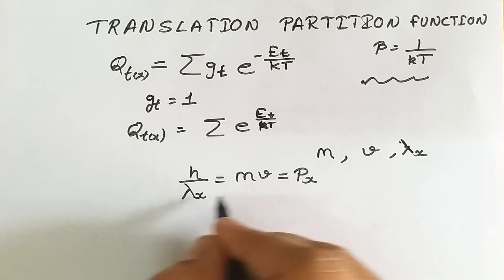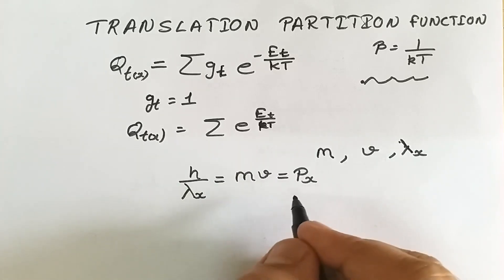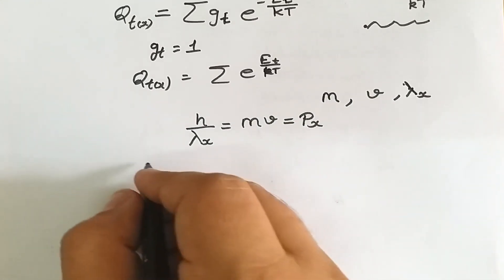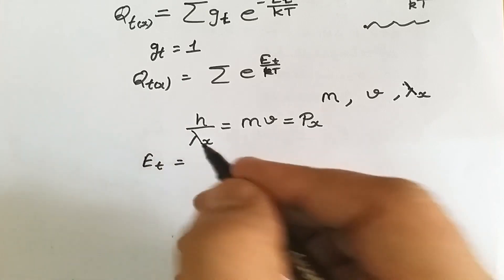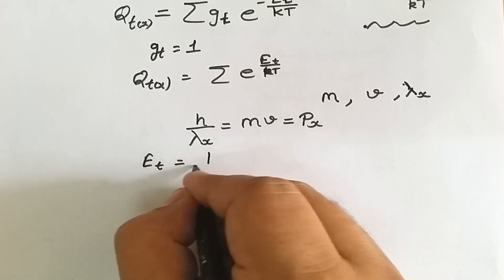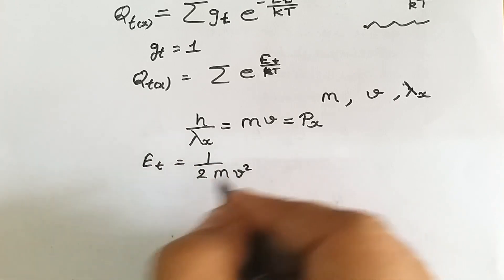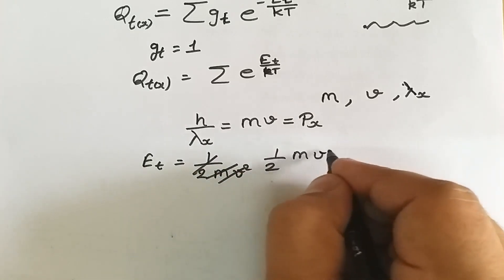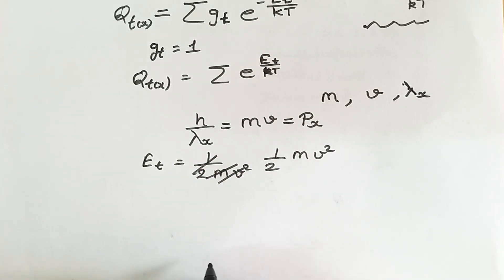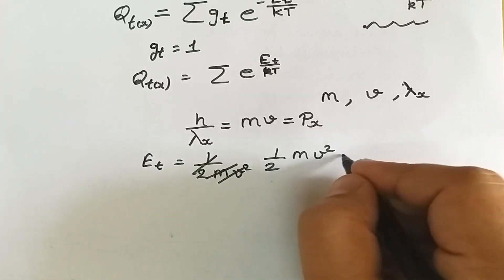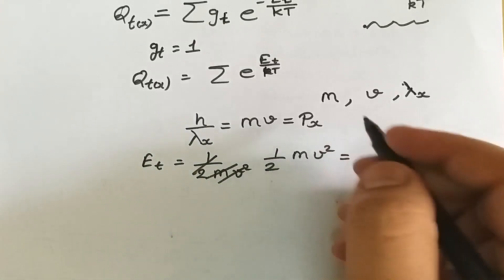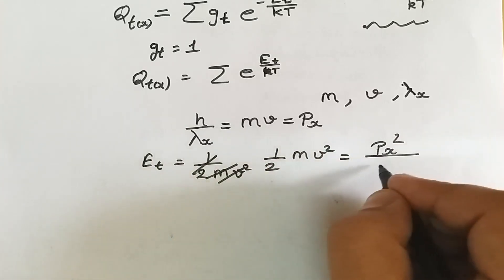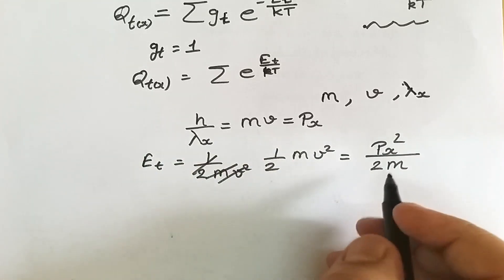As we know, when any particle is moving it possesses kinetic energy. The kinetic energy associated with any moving particle is given by half mv squared. If we want to convert this in terms of p_x, we write p_x squared by 2m. So the translational energy e_t equals p_x squared divided by 2m.